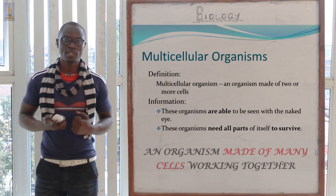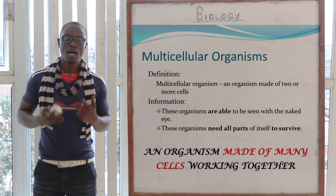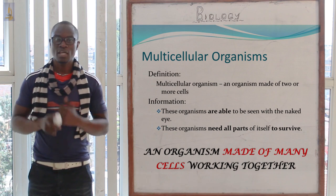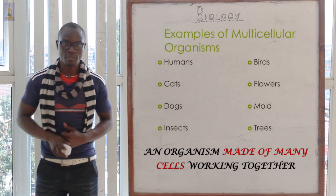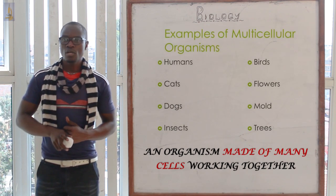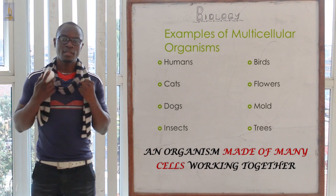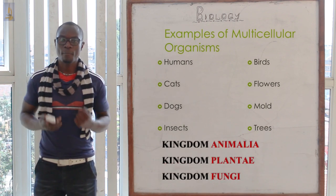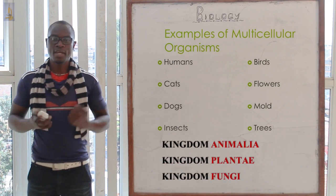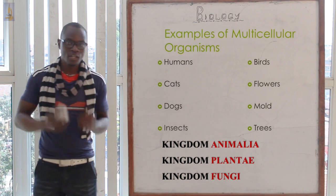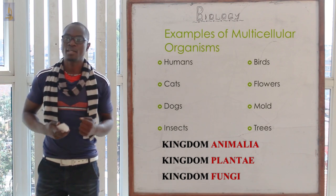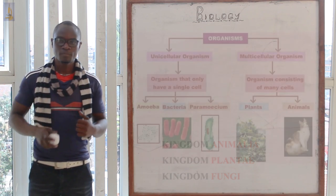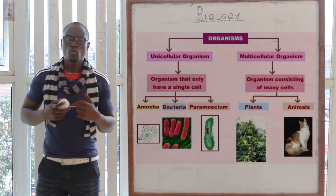The other type of organism we have is the multicellular organisms, which comprises of organisms having very many cells inside one large organism. Examples of kingdoms under the multicellular category include Kingdom Animalia, Kingdom Plantae, and some organisms of Kingdom Fungi.